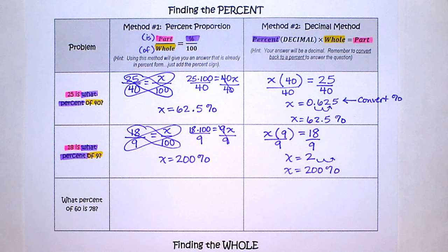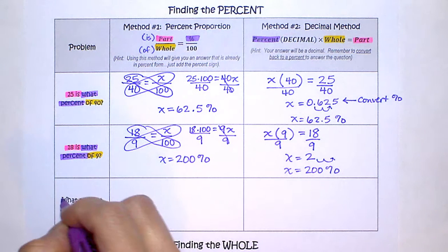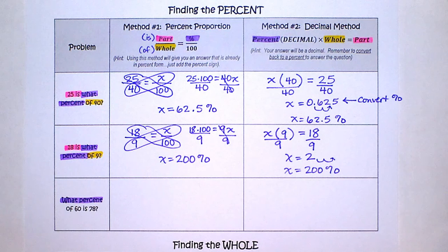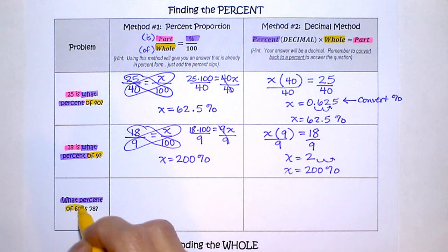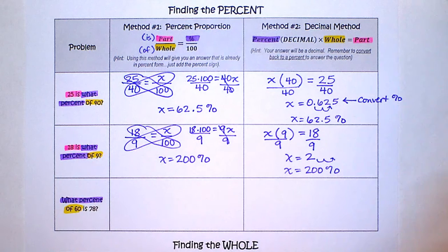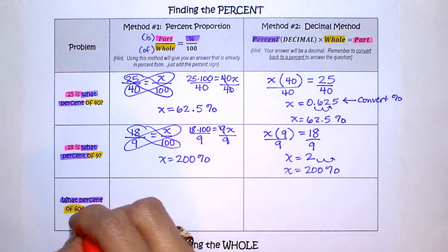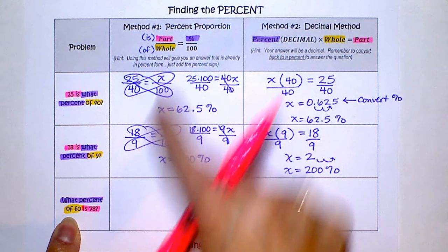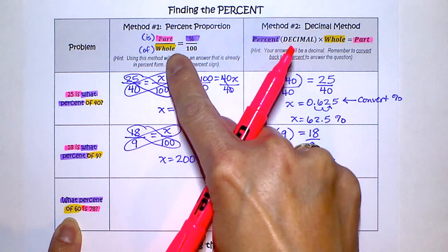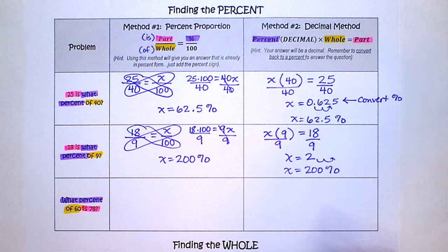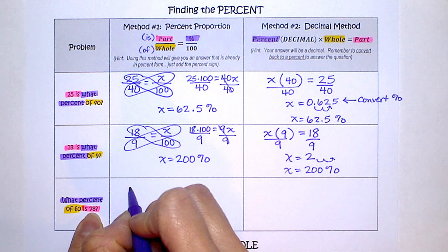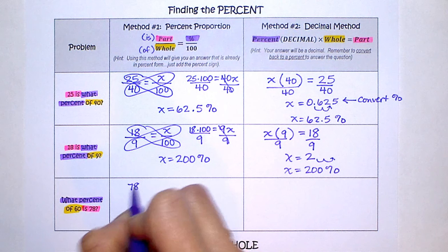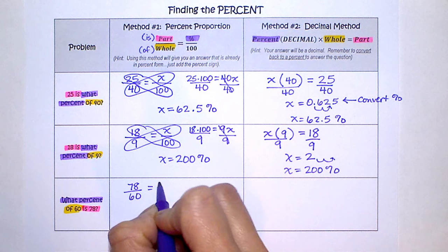Now let's go ahead and do the last one for this section. It says what percent of 60, be careful that's the of, is 78. So be careful when you're highlighting that you know which one is the part and which one is the whole. So the part is 78. So 78 over 60 equals x over 100.